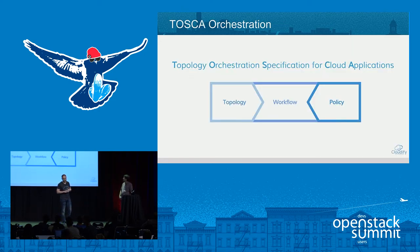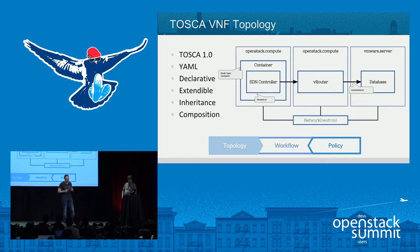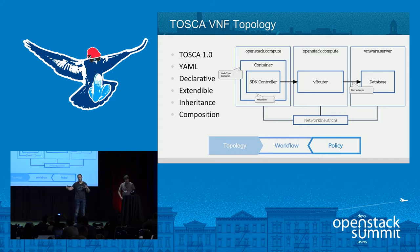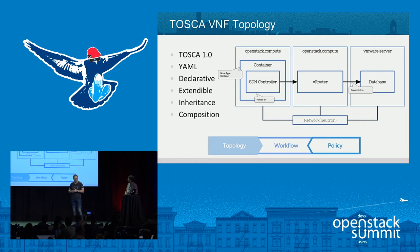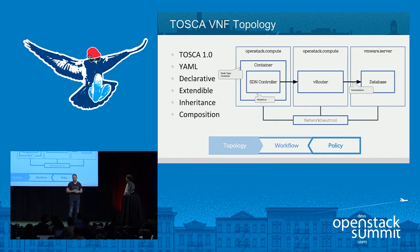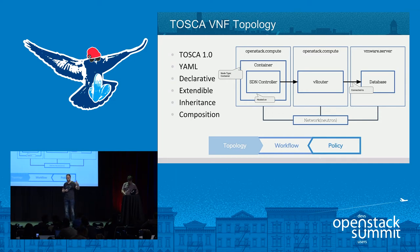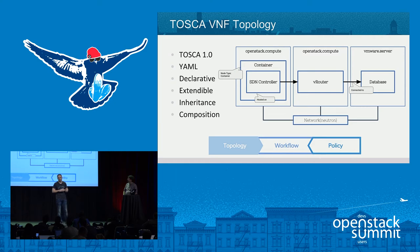Cloudify is based on Tosca. Tosca has three main parts. The first is the topology — essentially a YAML description of the application topology. I can have larger composed blueprints for more complex applications to describe my whole network service, using a simple YAML DSL to describe my topology. Tosca is a description language, so you can always extend it and introduce new node types. The language itself comes with a set of normative types that I can consume for describing my application, but I can always extend it to introduce a new node type to expose a new component not included in the original generic set of types.